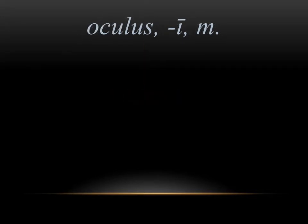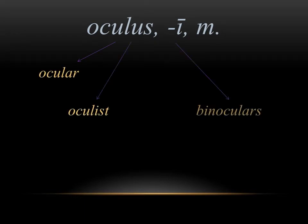The next word we have is oculus, which means eye. In English, we get words that all have to do with eyes — ocular, oculus, binoculars, monocle. They all have to do with your eyes, which makes sense.